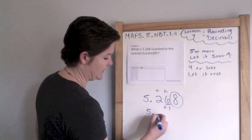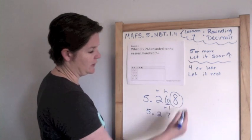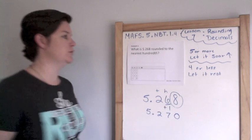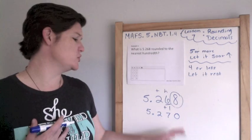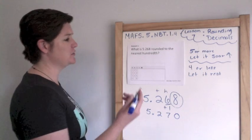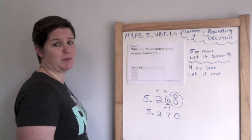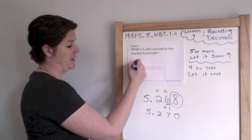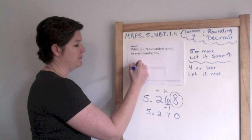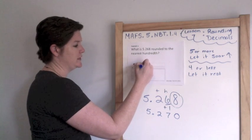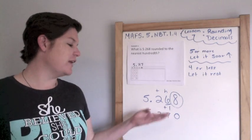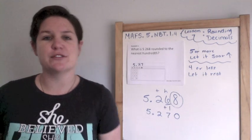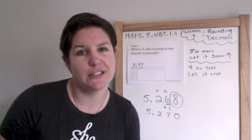So we bring everything down. Seven, and the eight becomes a zero. Because I'm such a scholar, I'm actually going to drop this zero, because it doesn't really matter when we're in the decimal places and there's nothing behind it. So five point two seven or five and twenty-seven hundredths. If you put five and two hundred seventy thousandths, I think they would give it to you.